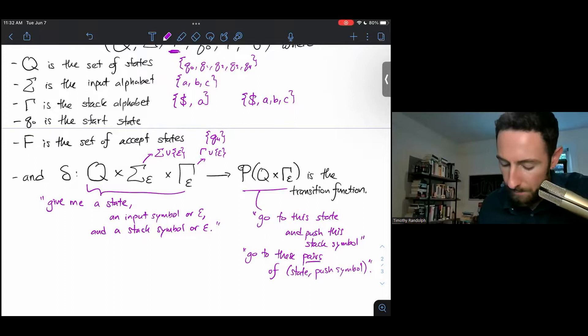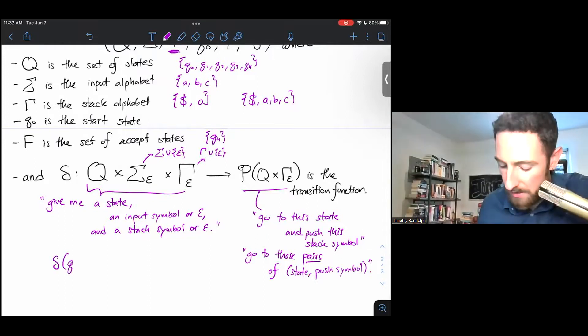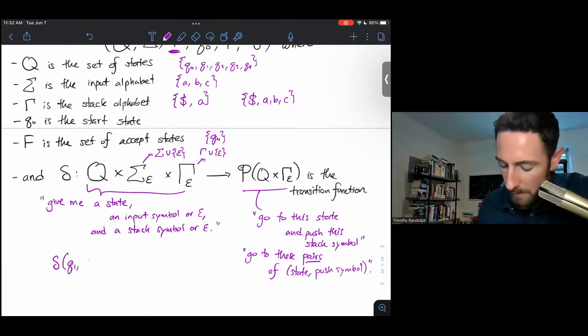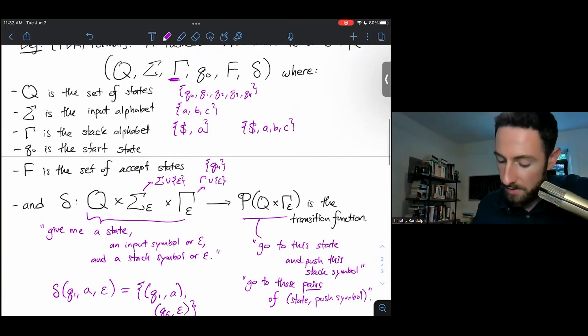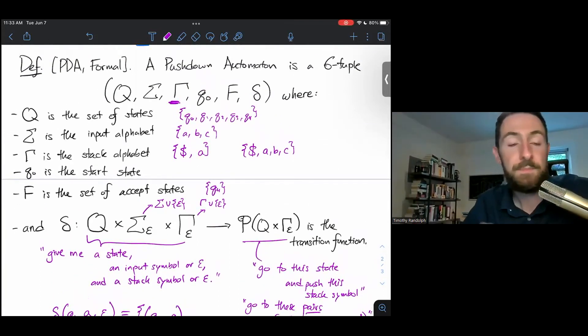So, an example of this, perhaps we're in state Q1. We read the input symbol a, and we pop the empty string, nothing off the stack. And perhaps that tells us one branch go to state Q1 and push an A onto the stack. Some other branch go to state Q6 and push nothing on the stack. And those would be the two things I would do on that transition. So that is our summary of the formal definition of a pushdown automaton. Thanks for watching this lightning review and I will see you in class.